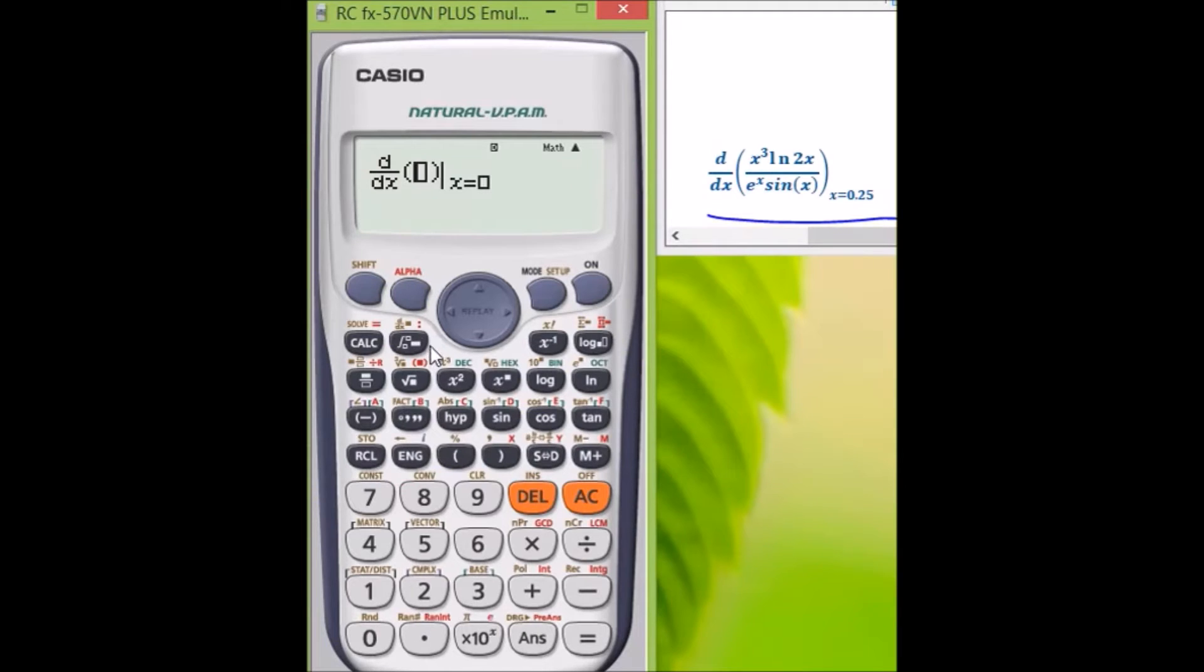So alpha, alpha x to the power three, press the right arrow key to get out of that power sign, times natural log two times alpha x, and then close parentheses.